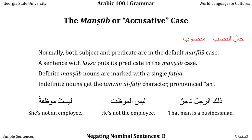In these examples: 'That man is a merchant' — Ar-Rajulu gets a single Dhamma because it's definite and in the Marfu case; Tajir gets Tanwina al-Dhamm because it's indefinite and also in the Marfu case by default. In the second sentence, the Mubtada is the unspoken pronoun Hua, which goes with Leysa. The Chabar, because it follows Leysa, is now in the Mansoub case, and because it's definite, we mark it with a single Fatah.